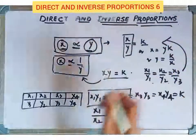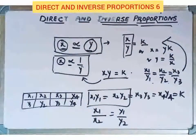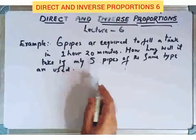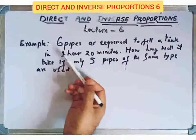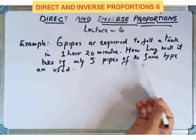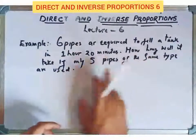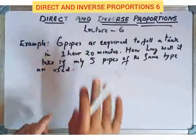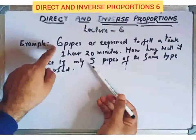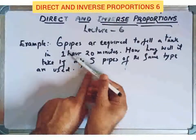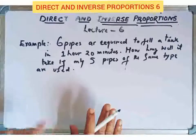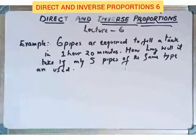Let's take an example of inverse proportions. Six pipes are required to fill a tank in one hour and twenty minutes. How long will it take if only five pipes of the same size are used? If it's 6 pipes, the time is 1 hour 20 minutes. With only 5 pipes, the number of pipes is less, so definitely the time taken will increase. So clearly this is a case of inverse proportions.